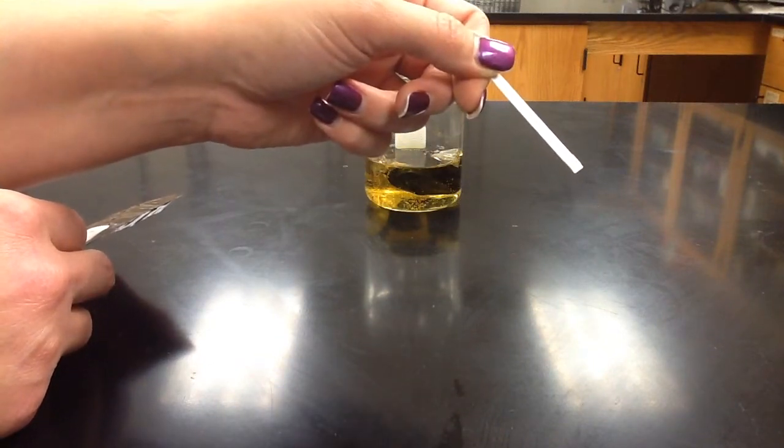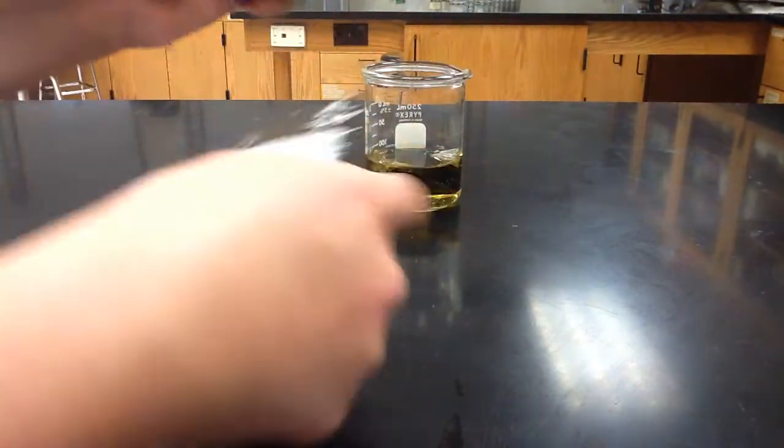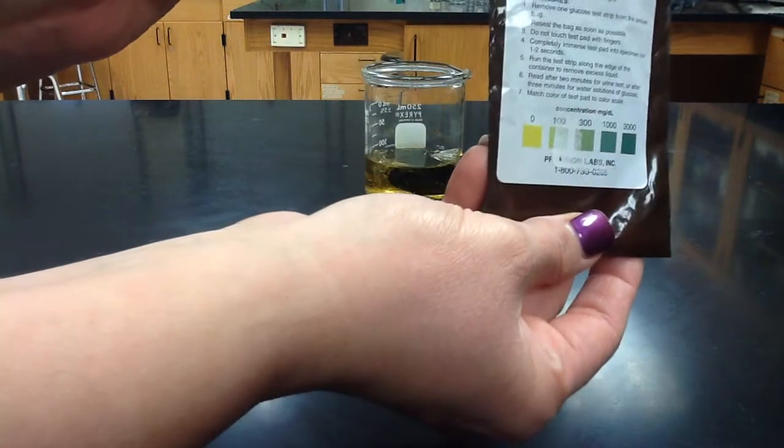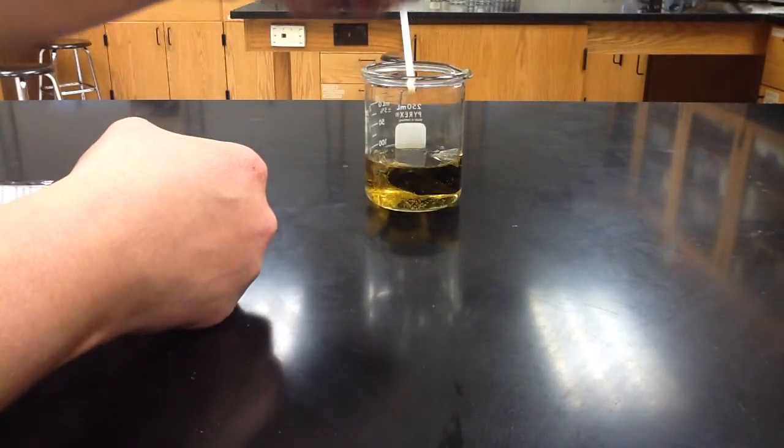Glucose test strips are yellow when you first get them out of the bag, and what the indicator tells you is that if it turns green, that means there's glucose in the solution.